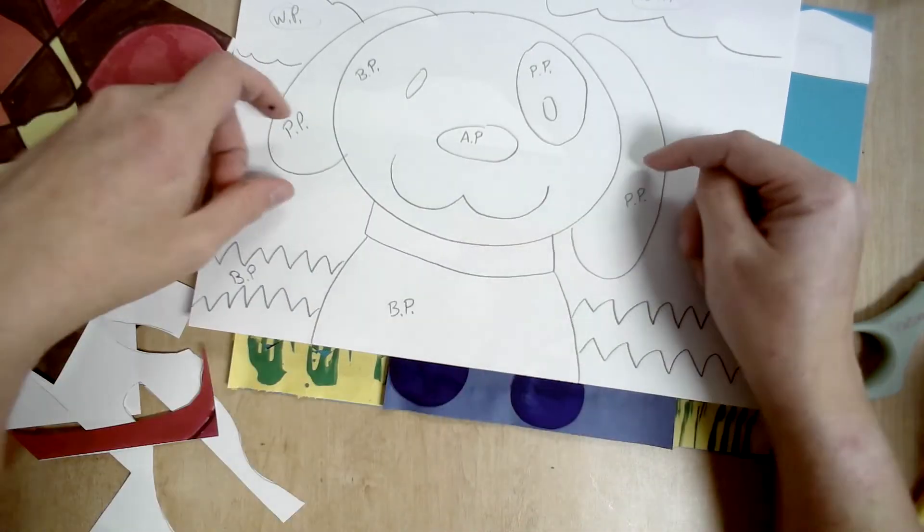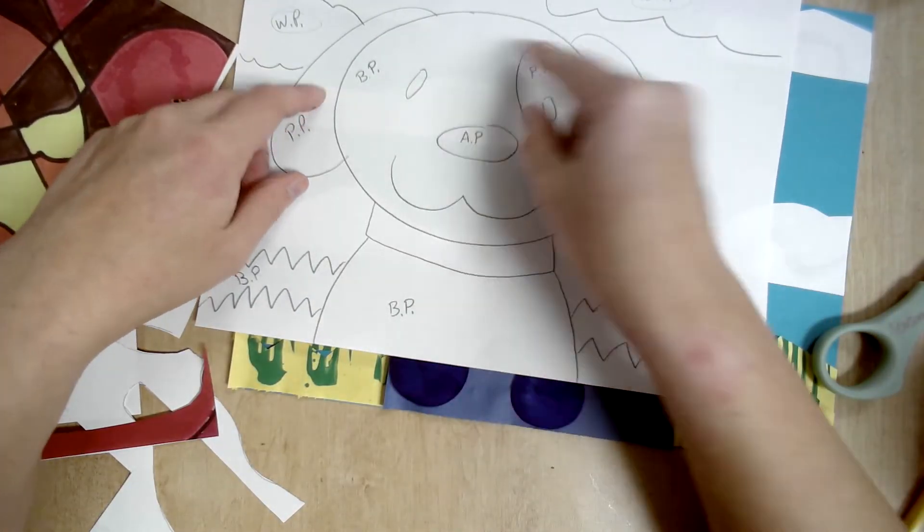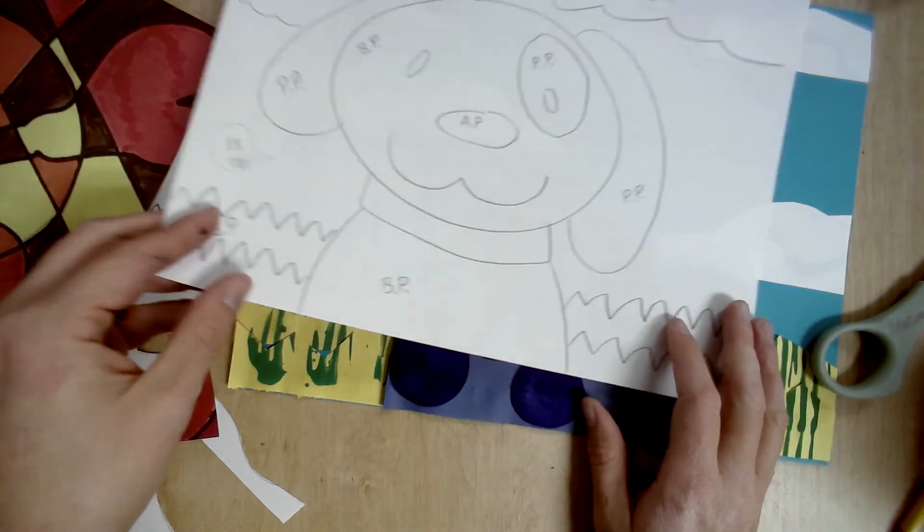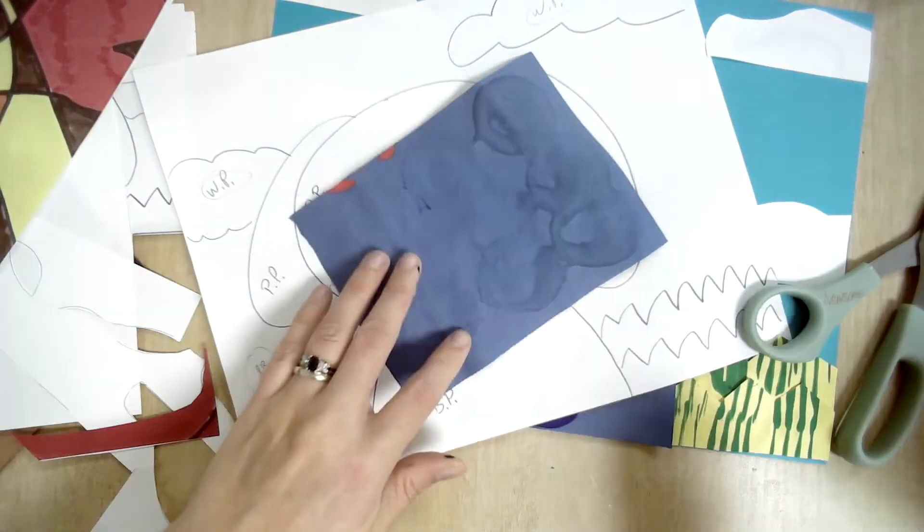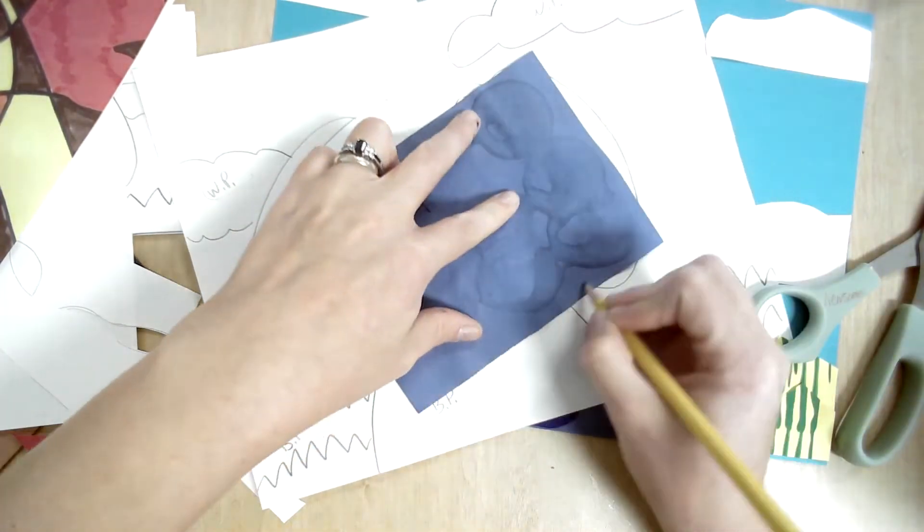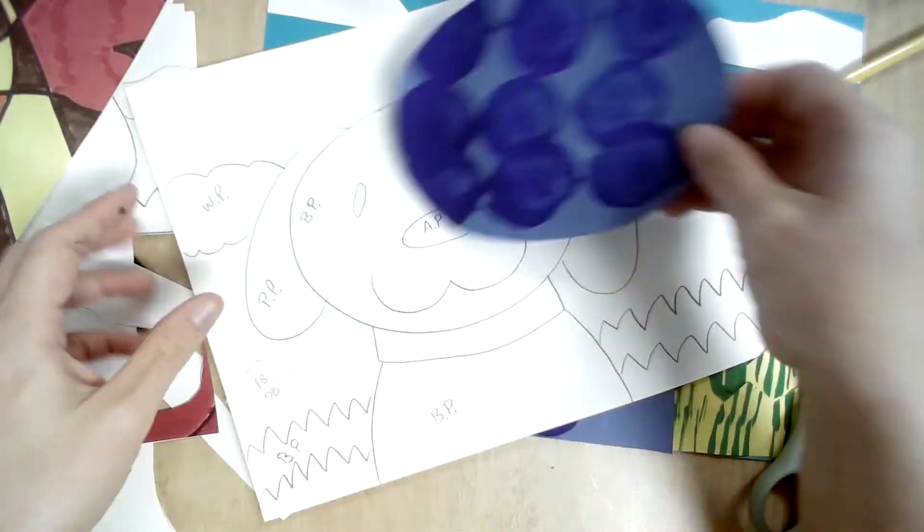So my head's here and my ears are going to be behind my head. But I have to go and make my head first so I know how large to make my ears. So if I look, essentially the head's going to be this entire sheet. So I'm going to draw it and then cut it out.